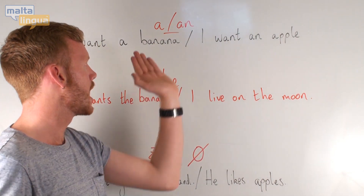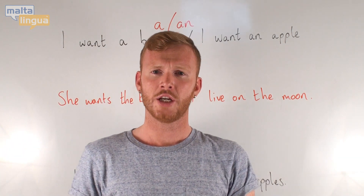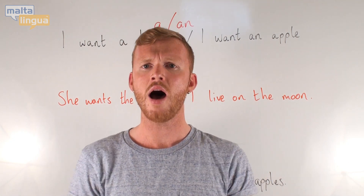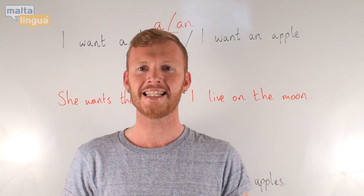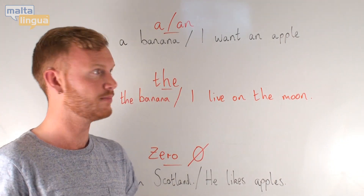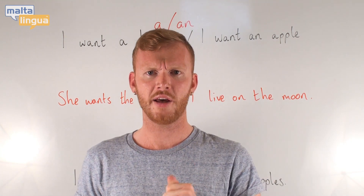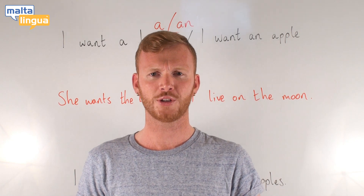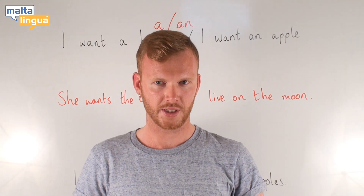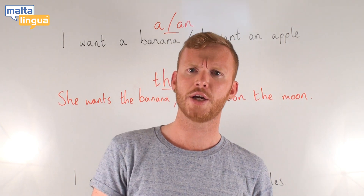So when do we use 'a' or 'an'? We use 'a' or 'an' to describe something more general, non-specific. 'A' and 'an' are examples of indefinite articles. For example: I want a banana. I want an apple. Is it a specific banana or a specific apple that I want? No — generally speaking, this is what I want. Non-specific.